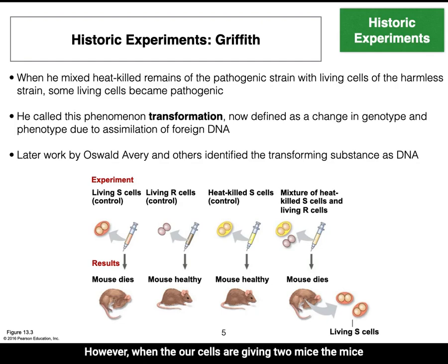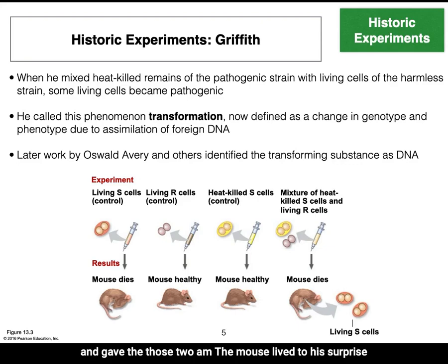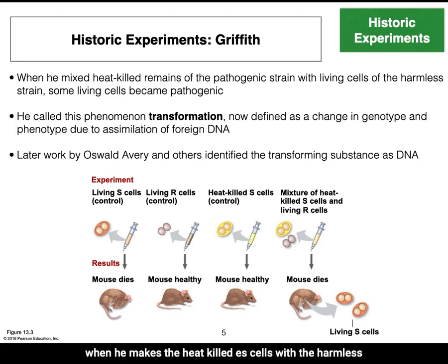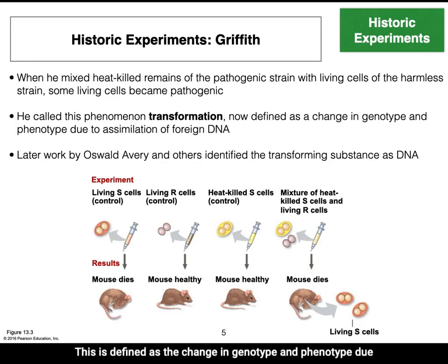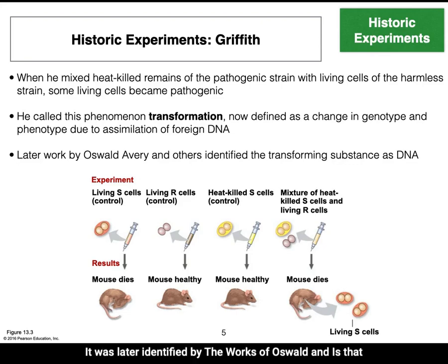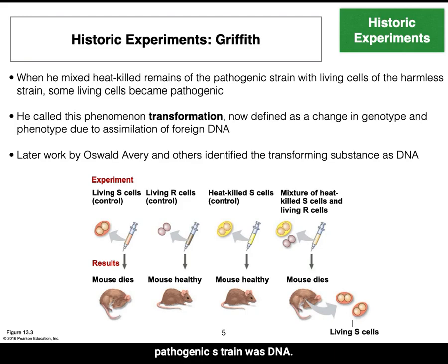Griffith then used heat to kill the S cells and gave those to a mouse — the mouse lived, to his surprise. When he mixed the heat-killed S cells with the harmless R strain and gave that to a mouse, the mouse died. The cells had become pathogenic. He called this phenomenon transformation, defined as the change in genotype and phenotype due to assimilation of foreign DNA. It was later identified by Oswald and others that the substance transforming the harmless R strain into a pathogenic S strain was DNA.